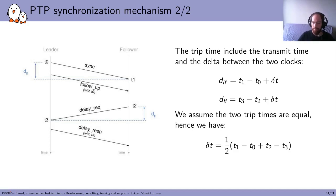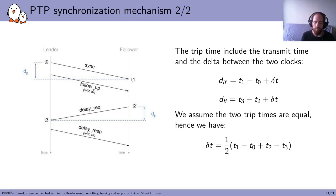Thanks to this delta, the PTP implementation will be able to use some algorithm — some of which are called filters — to know what sort of adjustment should be done on the local clock: should the frequency be lowered or increased, should we set the time, should we adjust the phase? Many things can happen, and that will depend on all the computations done locally. But the key element used for this computation will be the delta between the two clocks.